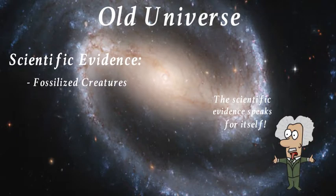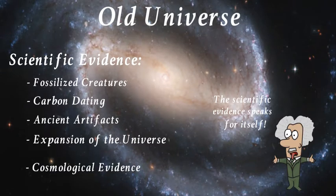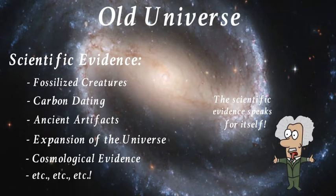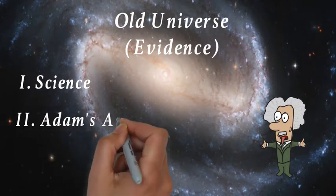Fossilized creatures, carbon dating, ancient material dating back more than 10,000 years ago, the expansion of the universe, other cosmological evidence. I'm not going to dive into all of these things, but I'll put some links in the description below if you're interested in learning more about them. But the important thing to know is this. Old earthers believe that the overwhelming amount of scientific evidence proves that God chose to take a much longer time to create the universe rather than just six normal days.